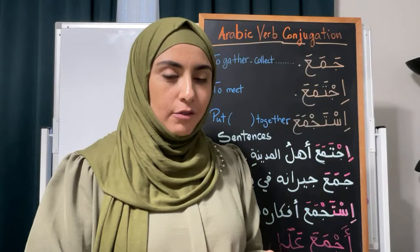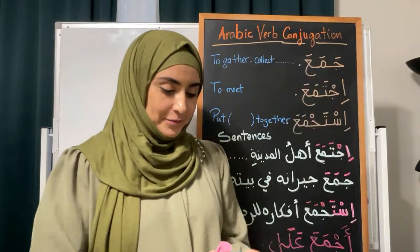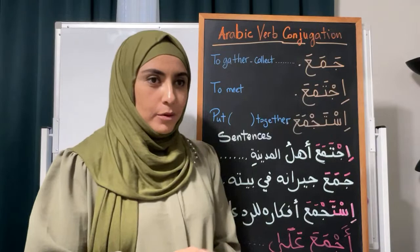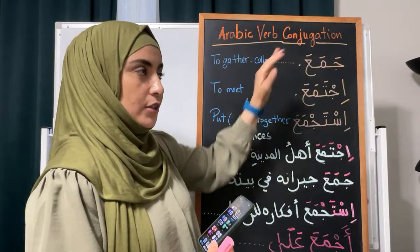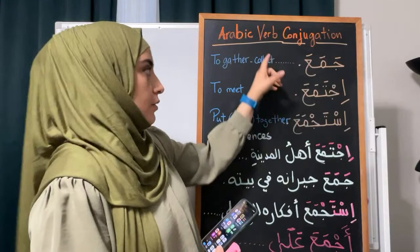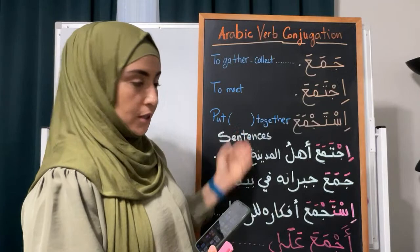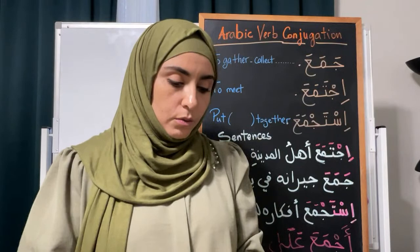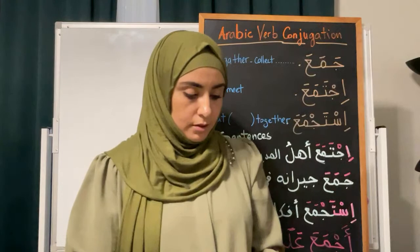We'll also identify the meaning. We shared the root, which is jim, meem, ayn — jama'ah. If you know the meaning of jama'ah, you can insert it in the live chat. The shared meaning is 'gather,' but jama'ah means to gather or collect, ijtama'ah means to meet, and istajma'ah means to put together. Have you found similar meanings when we introduced these verbs in the live chat last time?